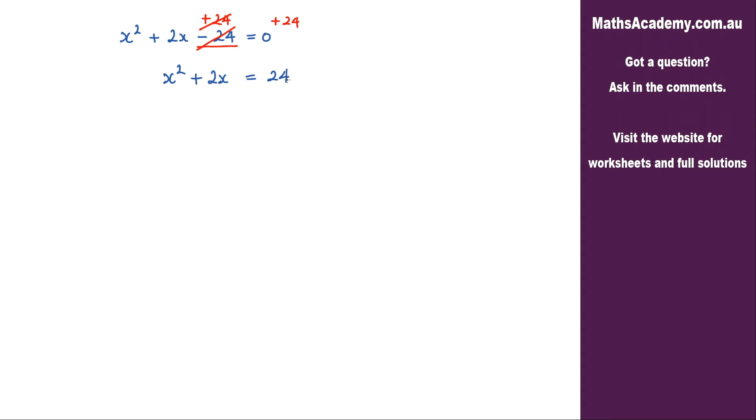Now the next step is to always check the coefficient of the x squared term and make sure it's equal to 1. Now in this case it is which means there is a step we can skip and if you check my other videos you'll find some where the coefficient of the x squared term is not equal to 1. So that will show you what to do in that particular case. In this case it is equal to 1, in other words there is a 1 there, it is 1 x squared.